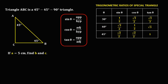For the next given, triangle ABC is a 45-45-90 degree triangle. Given side A is 5 centimeters; find side B and side C. Opposite to angle C is side C, opposite to angle A is side A, and opposite to angle B is side B. Since angle A and angle B are equal, side A and side B are also equal. Since side A equals 5 centimeters, side B is also equal to 5 centimeters.